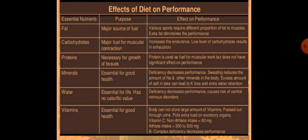Water is another essential component of the diet — it is essential for life and has no energy or calorific value. Deficiency of water decreases performance and causes risk of central nervous system disorders. Deficiency of water during performance can cause dehydration and cramps. Bodies must remain hydrated during performance, as there is significant loss of water due to excessive sweating during physical activities. That is why the role of water in performance is very important — it keeps the body hydrated.